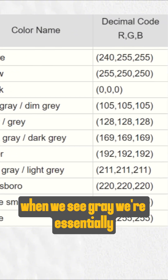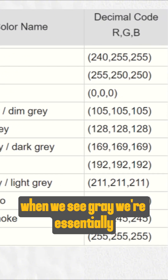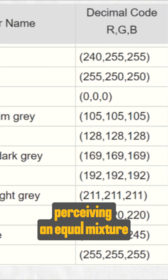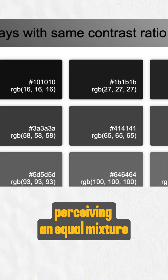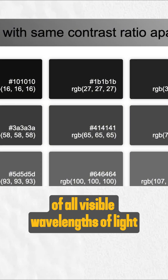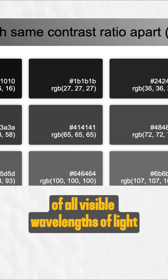When we see gray, we're essentially perceiving an equal mixture of all visible wavelengths of light.